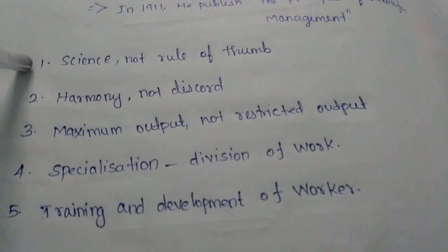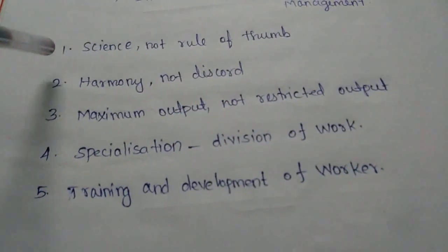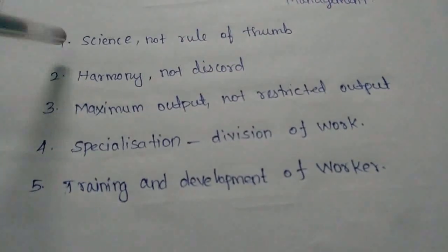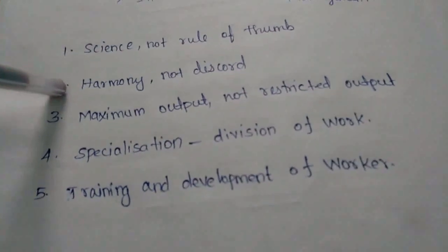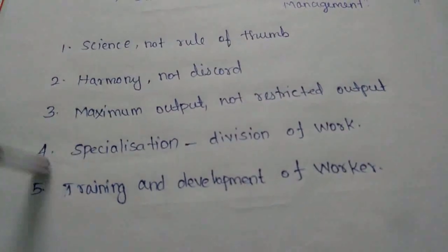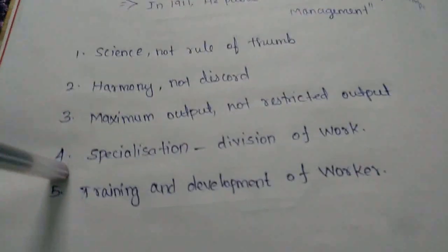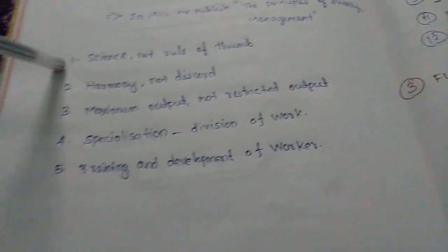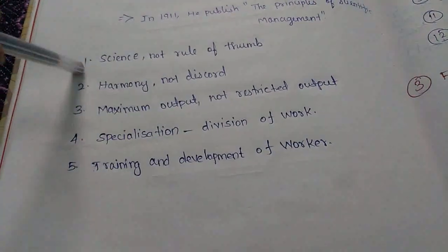The principle of scientific management — heading key. For each heading, explain for easy marks. The five principles are: 1. Science not rule of thumb, 2. Harmony not discord, 3. Maximum output not restricted output, 4. Specialization and division of work, 5. Training and development of workers. Question 1, point 1: Science is not rule of thumb.